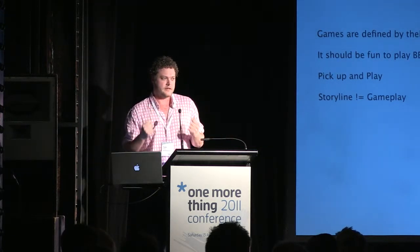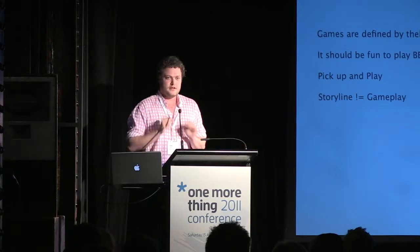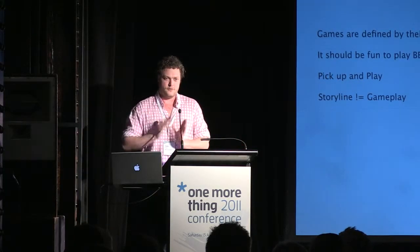We really worked hard to absolutely refine what the fun part of the game was and just focused on that. We made sure it was pick up and play, and that it was fun before it looked good — it didn't rely on feedback to be fun. Storyline isn't gameplay. A lot of people come to us and say 'I've got a great idea for a game — it's about someone saving their dog.' That's not a game. A game is basketball where you've got rules. So we make sure those rules are correct, then we add the story and polish upon that — getting those basics right before you progress.